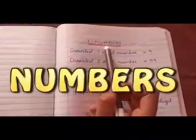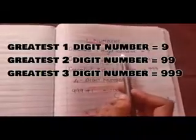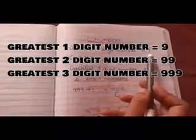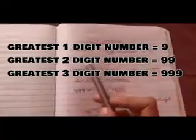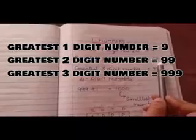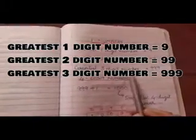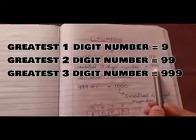In the earlier classes you have learned about the greatest one digit number, that is 9, and the greatest two digit number, that is 99, and the greatest three digit number, that is 999.